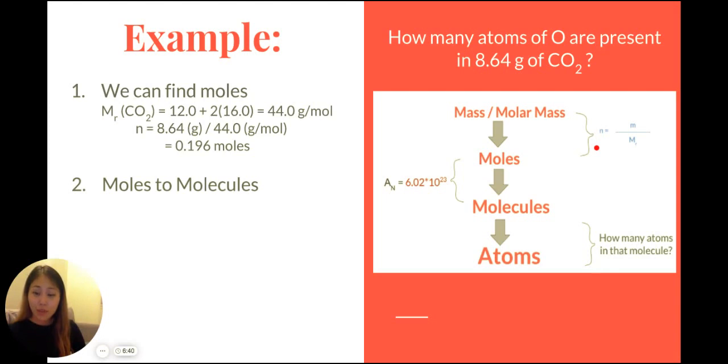The second step is converting from moles to molecules. So moving from moles to molecules, we know that conversion requires the multiplication of Avogadro's number. So we already found 0.196 moles of carbon dioxide. We multiply this by Avogadro's number, 6.02 times 10 to the 23, and that gives us 1.18 times 10 to the 23 molecules of carbon dioxide.